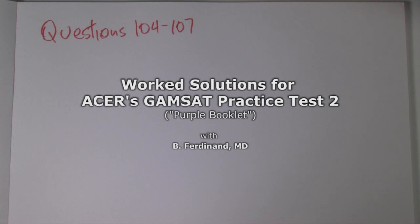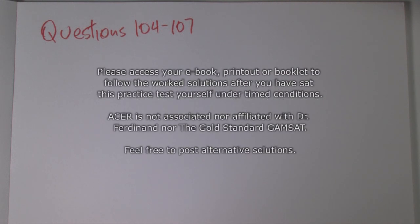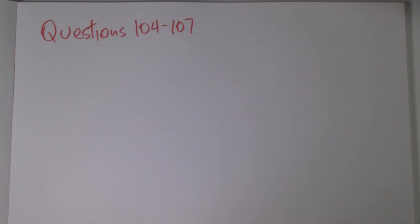Okay, so questions 104 to 107, this is about buffers, and it's very good to get this language clear in your mind that the acid is HA and its conjugate base is A minus. If you ever have problems with that, always think of a base, OH minus, famous base. You know that the base is the deprotonated form, and the acid is the protonated form, it's the HA, that is the acid.